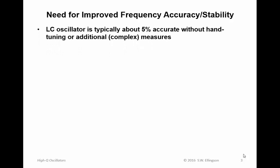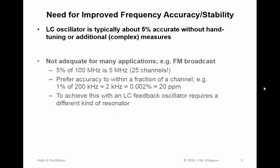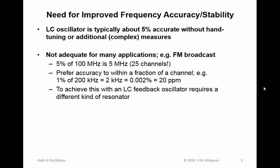An LC feedback oscillator using discrete inductors and capacitors is typically about 5% accurate in the first draft design. That means the intended frequency can be off by as much as 5%, and to get better frequency accuracy requires some hand-tuning or additional complex measures, which increase the cost and complexity of the design and may not result in a sufficiently good result. But this just isn't adequate for many applications.